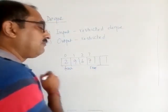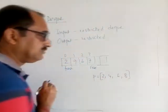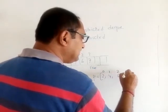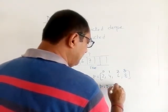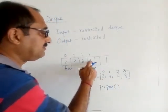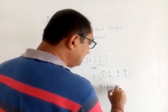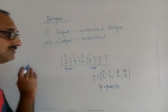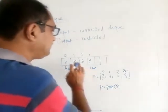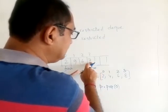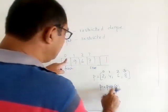Deletion can take place from both ends. Using a list in Python, if p = [2, 4, 6, 8], then p.pop() removes 8 from the rear end. To remove from the front (index 0), you write p.pop(0), which removes 2. So deletion from the rear end is straightforward like a stack, while deletion from the front uses pop(0).